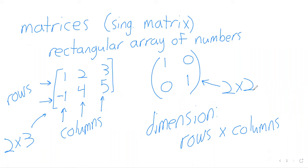Matrices are traditionally — though not always — given names that are capital letters from the beginning of the alphabet. Just as functions are often called f, g, h, and variables x, y, z, matrices are most often capital A, capital B, capital C. Assuming we're using this notation, we can refer to a specific entry of a matrix using very standard notation.